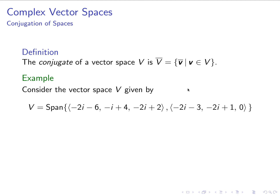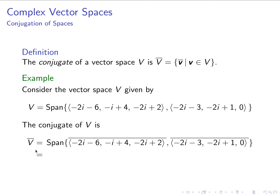For example, let's say our vector space is spanned by two vectors. The first basis vector is (-2i - 6, -i + 4, -2i + 2) and the second is (-2i - 3, -2i + 1, 0). To work with the conjugate of this vector space, we conjugate every vector in the list. So the conjugate vector space is spanned by (2i - 6, i + 4, -2i + 2) and (2i - 3, 2i + 1, 0).